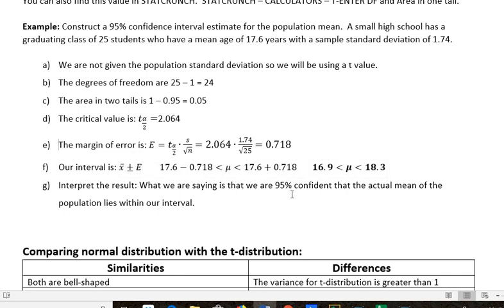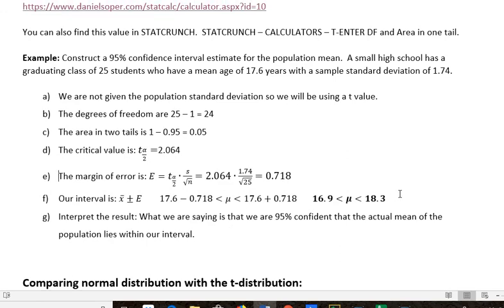That's what we're saying. And we're saying it with a 95% confidence. We are 95% confident that the actual mean of the population lies within our interval. This is the mean population for students graduating.